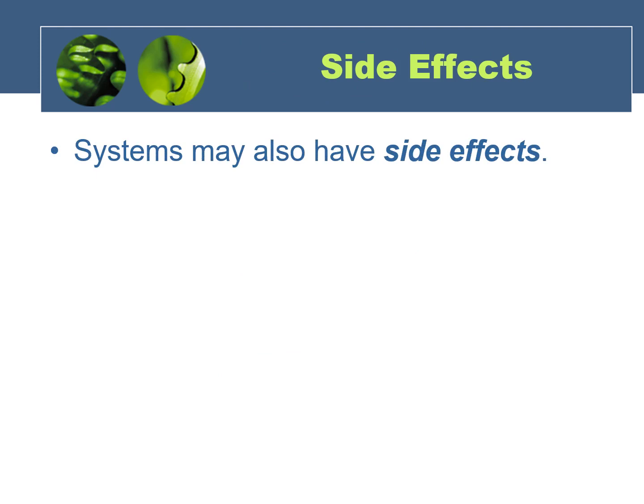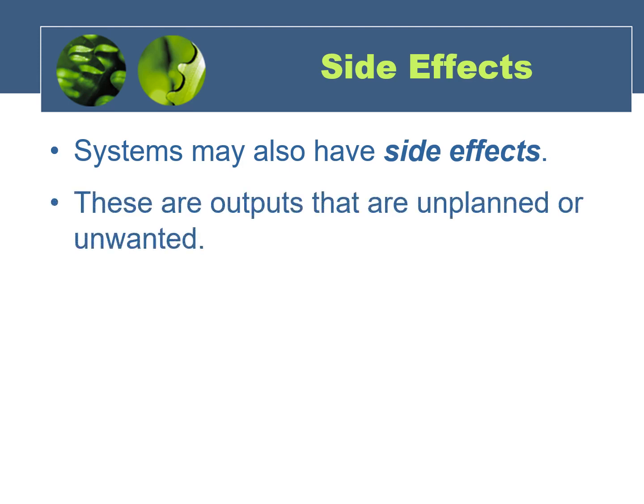Unfortunately, many systems also have what we call side effects. We previously talked about outputs — and there, what we were actually talking about were the intended or desired outputs, in other words, what the system is meant or designed to do. Side effects are actually unintended or undesired outputs. They are things that come out of or are produced by a system that we really didn't plan on or didn't want to happen.